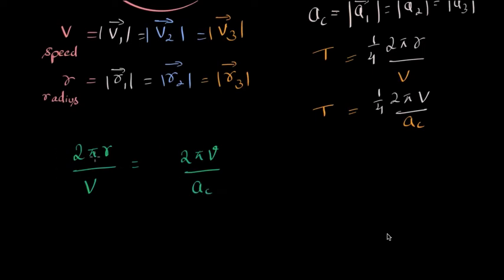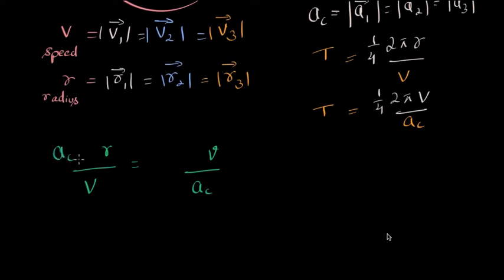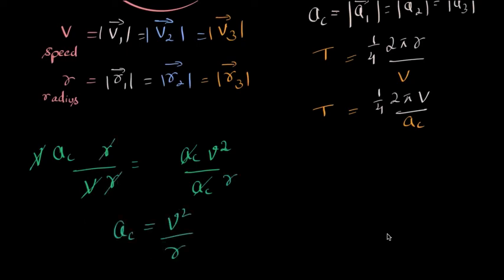The 2π and the 1/4 cancel from both sides. So finally, r/v = v/a, which gives us the centripetal acceleration: a = v² / r. This is a simple calculation. So this is one method to derive centripetal acceleration. There are many other techniques as well.